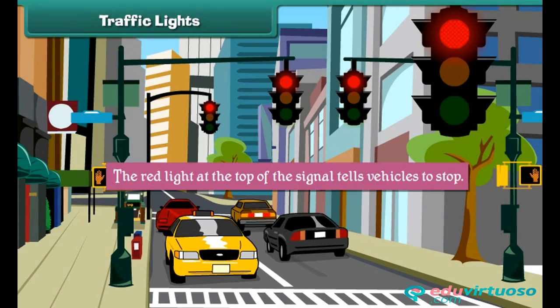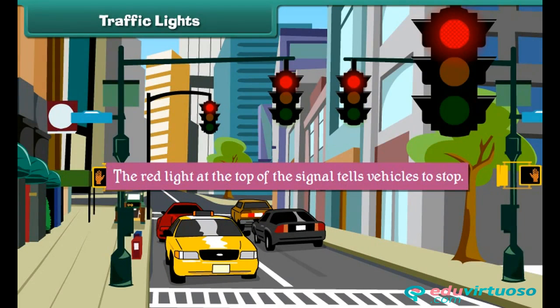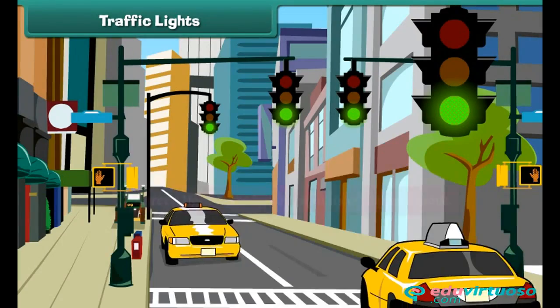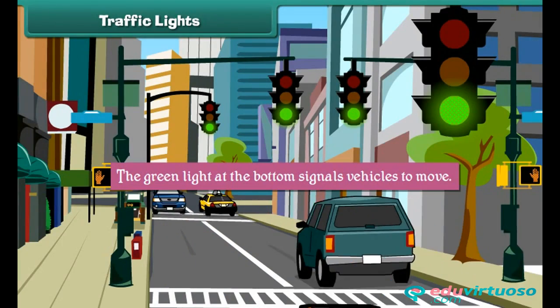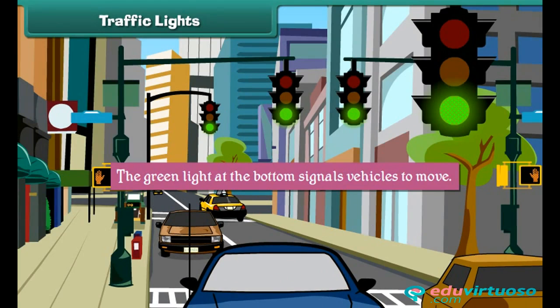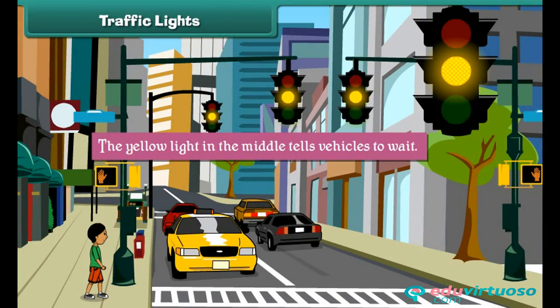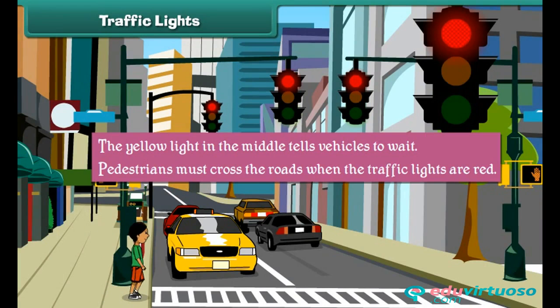The red light is at the top of the signal and tells vehicles to stop. We must cross roads when vehicles stop for the red light. The green light is at the bottom and tells vehicles to go — we must never cross the road when lights are green. The yellow light is in the middle and warns vehicles that the lights are about to turn red, telling them to slow down.